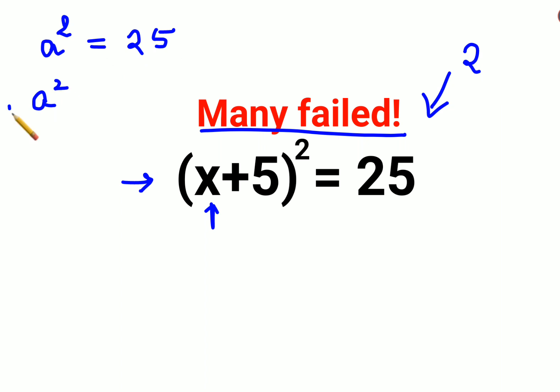When you take square roots on both sides, you have to remember it will be in terms of plus minus. So I can say the value of a comes out to be plus minus 5.